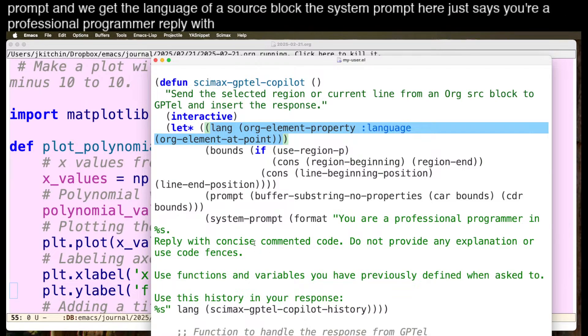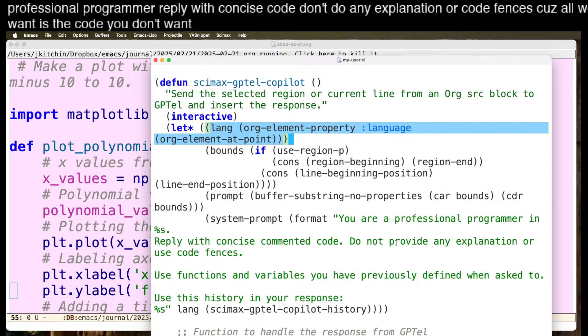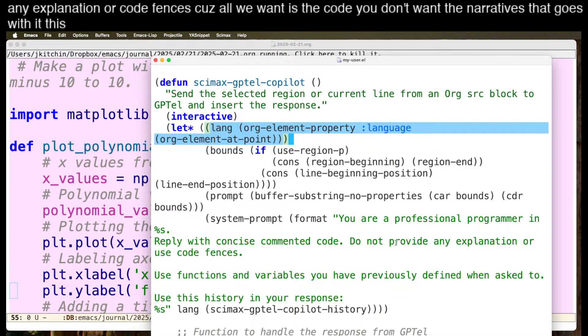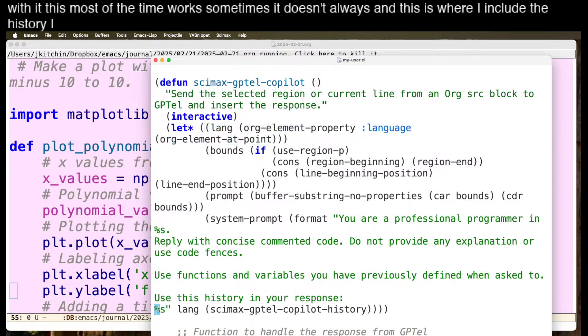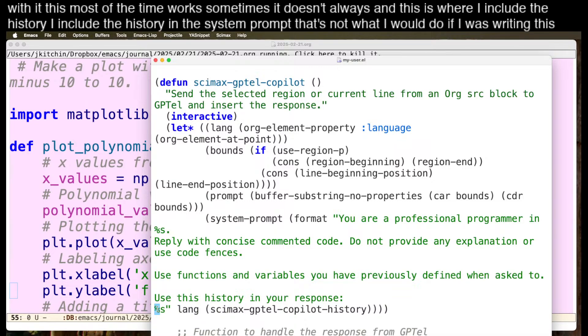The system prompt here just says if you're a professional programmer, reply with concise code. Don't do any explanation or code fences because all we want is the code. You don't want the narrative that goes with it. This most of the time works, sometimes it doesn't always. And this is where I include the history. I include the history in the system prompt. That's not what I would do if I was writing this with LiteLLM and Python.